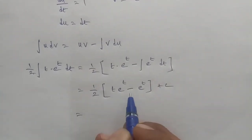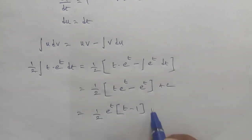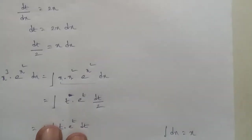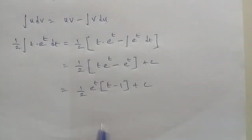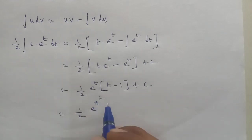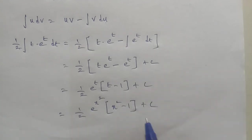Taking e to the power t as a common factor, the result is 1 by 2 times e to the power t into t minus 1, plus c. Back-substituting t equals x squared gives the final answer. Thank you.